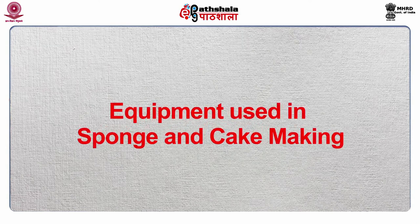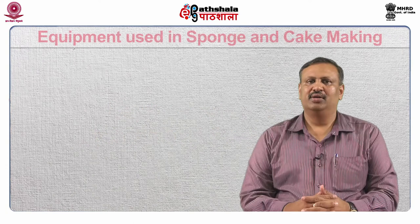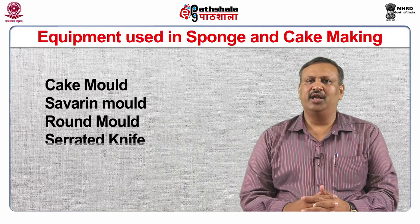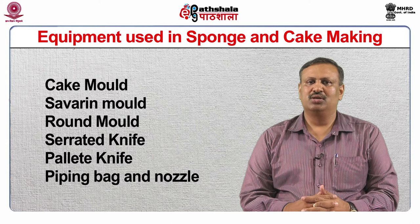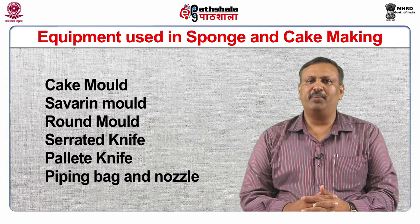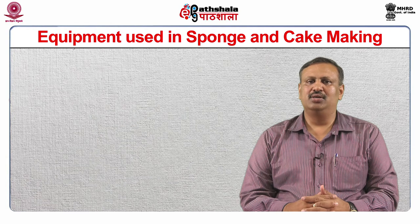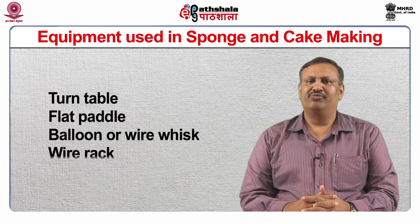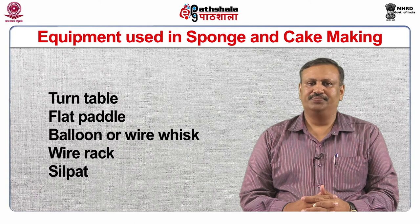Now I am going to discuss different equipment used in sponge and cake making. They are cake molds, savarin molds, round molds, serrated knife, palette knife, piping bag and nozzles, turntable, flat paddle, balloon or wire whisk, wire rack, and silpat.